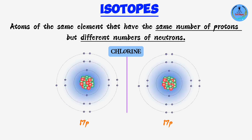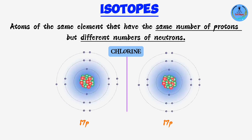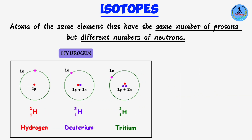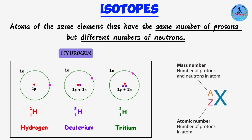In isotopes, atoms of the same element have the same number of protons but different numbers of neutrons. Within an atom there are three particles: electrons found outside the nucleus, and protons and neutrons inside the nucleus. Hydrogen has three different types of atoms depending on the number of neutrons. The first, protium, has one proton and no neutrons. The second, deuterium, has one proton and one neutron.